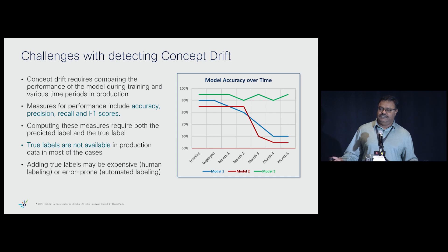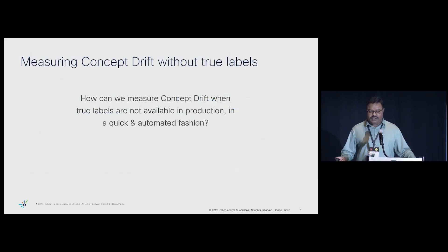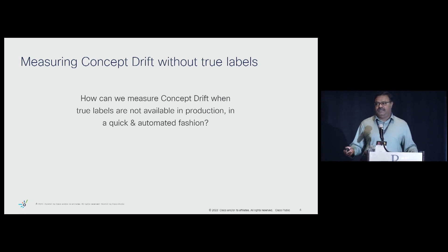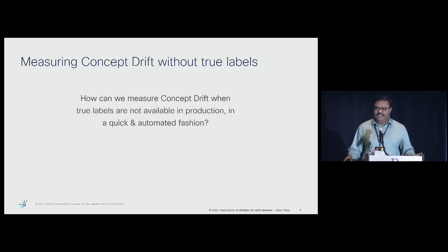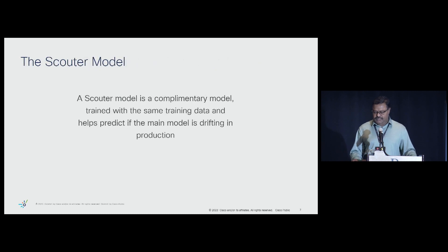Adding true labels is expensive — you have to do something like human annotation, or it could be error-prone automated labeling. So what other options exist? This is where we started thinking: how can we measure concept drift in production without having a true label? Drift is more of an indicator — it doesn't have to be exactly accurate. All we are looking for is some kind of symptom or sign that something is going wrong, maybe I need to dive more into it. That's where we came up with the Scouter model concept.